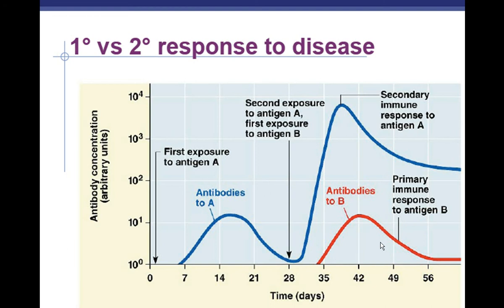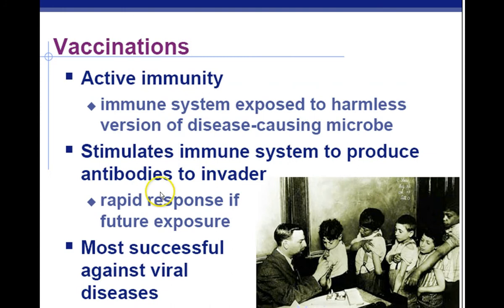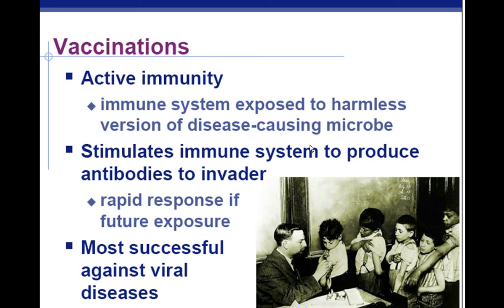Vaccinations are active immunity. Active immunity means your immune system is triggered or stimulated to produce antibodies and memory cells against an invader, so your body will actively defend against future attacks. It's most successful against viral diseases — things like smallpox and polio have been mainly eradicated as a result of vaccinations triggering the immune system to produce B cells and memory cells that fight the real thing.